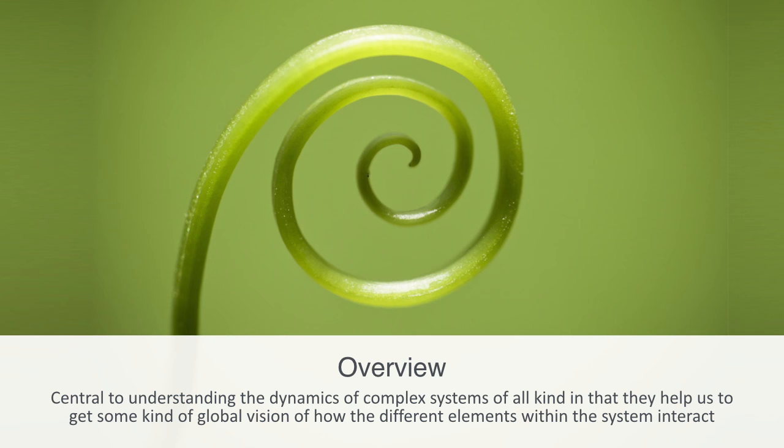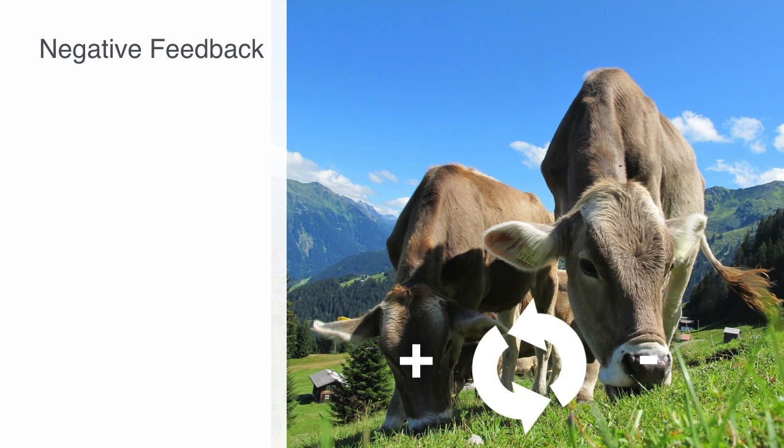We'll cover virtuous and vicious cycles, attractors and stability landscapes. Ecosystem feedback is the effect that change in one part of the ecosystem has on another, and it forms the basic dynamics for regulating the overall state of the ecosystem.